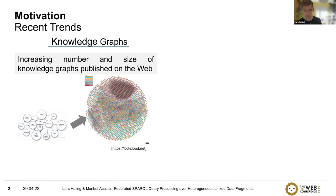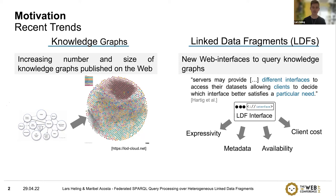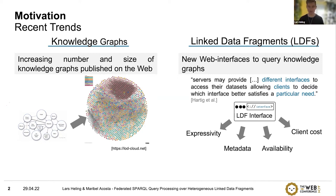At the same time, we also saw new so-called linked data fragments being developed, which are web interfaces to query knowledge graphs. The idea is that servers can provide different interfaces to access their datasets, allowing clients to decide which interface better satisfies their needs. These interfaces differ regarding their expressivity — which fragment of SPARQL they support — the metadata they provide, their availability, and the cost for the client when evaluating SPARQL queries.